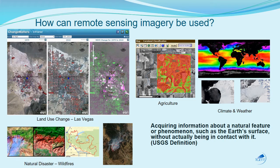Acquiring information about a natural feature or phenomenon such as the Earth's surface without actually being in contact with it is the USGS definition for remote sensing. How can it be used? We use it for land use planning — we can look back at land use in the past, see where it is today, and do some change detection.